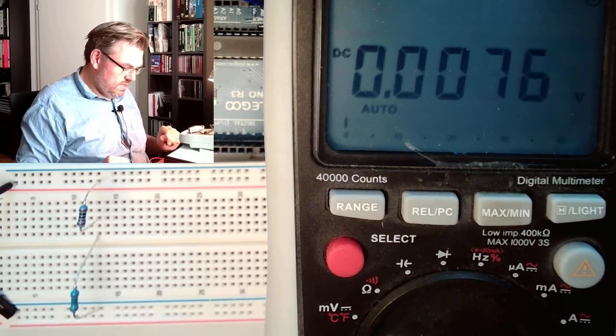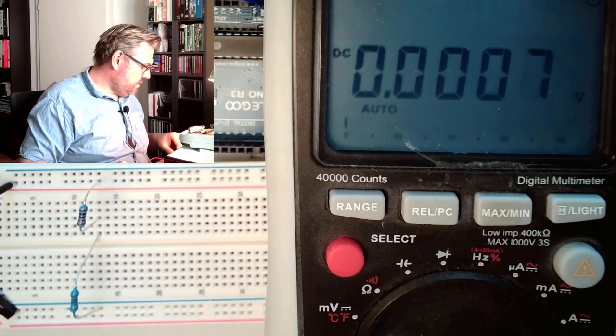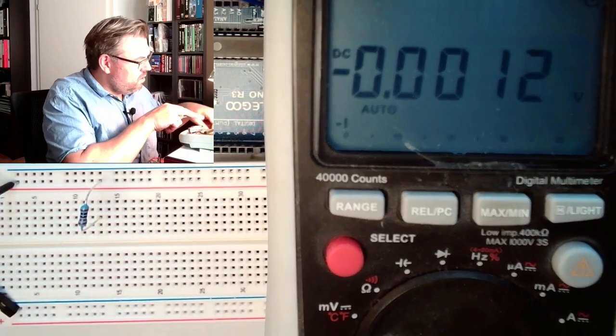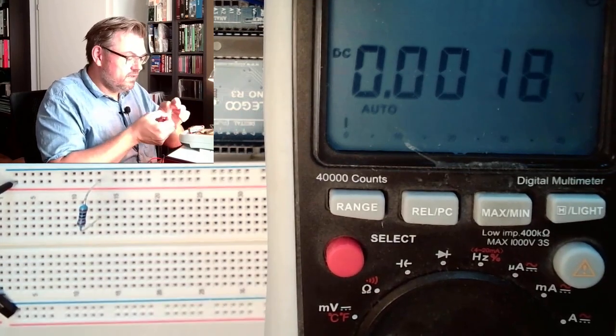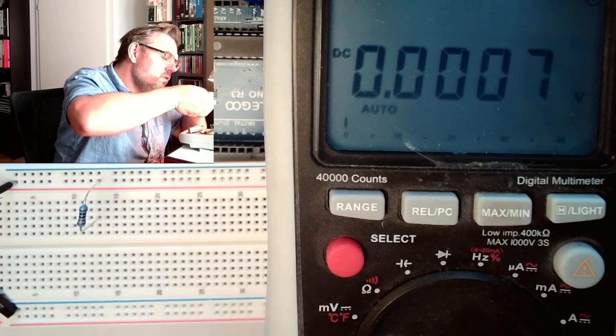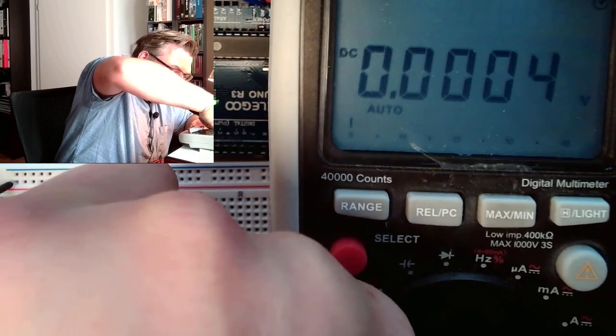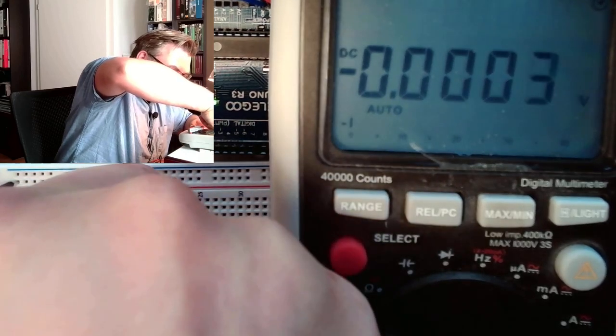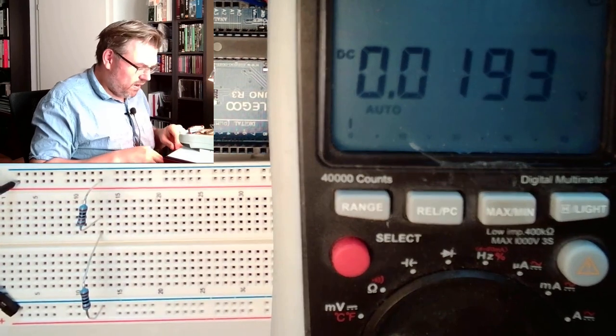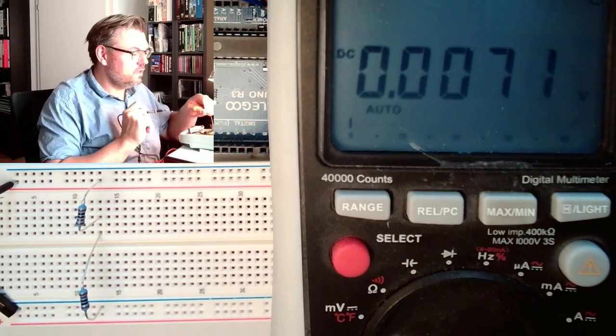To see if I am really correct, I will replace now this 2K resistor with another 1K resistor. So now we should see that the voltage is equally distributed. Now we would expect in the middle to have around 2.5 volts. Let's see.